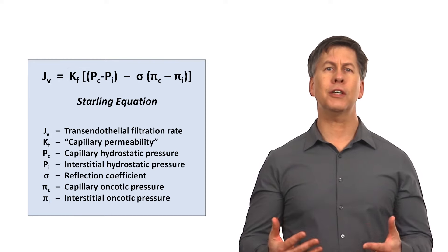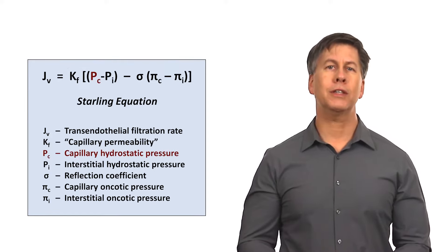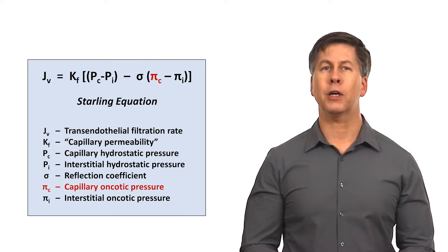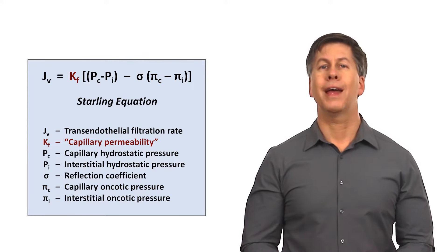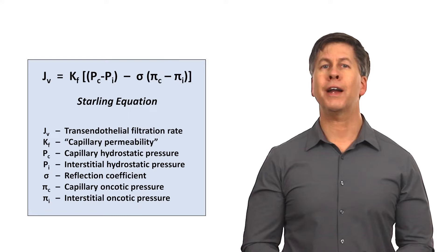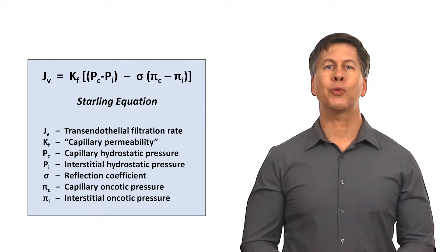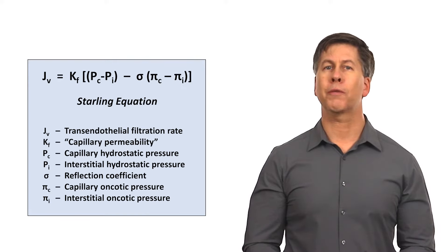Thus, this gives us three general physiologic categories of edema: increased capillary hydrostatic pressure, decreased oncotic pressure due to hypoalbuminemia, and increased capillary permeability. A fourth category, which is not accounted for by the Starling equation, is when the drainage of the accumulating interstitial fluid is impaired by obstructive lymphatics.